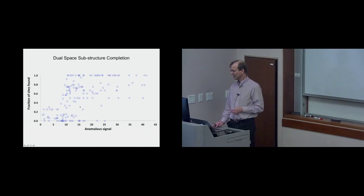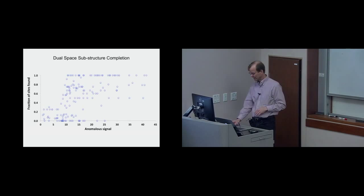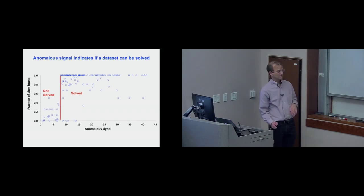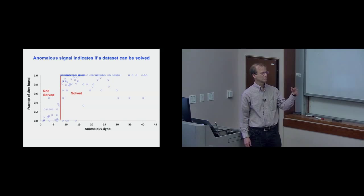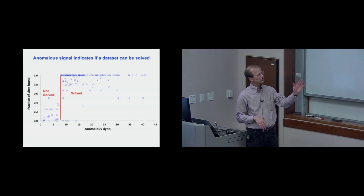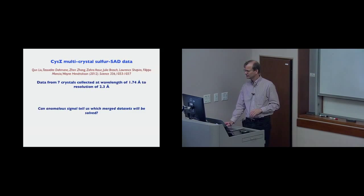The anomalous signal is very closely related to whether or not you're going to actually solve the structure. Looking at recent real data — a couple of years ago Wayne Henrickson's group published a paper in Science showing that by combining data from multiple crystals, you could get sulfur-SAD data good enough to solve structures. We tested whether the anomalous signal could tell us if we ought to be able to solve certain data sets, and whether we could solve structures with fewer crystals using the likelihood-based methods just described. The data goes to 2.3 Angstroms, collected at 1.74 Angstroms — a sulfur-SAD experiment.